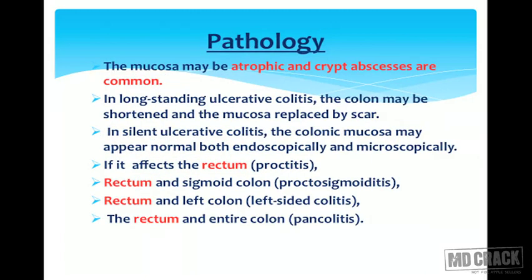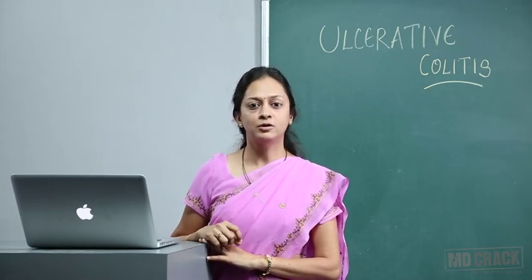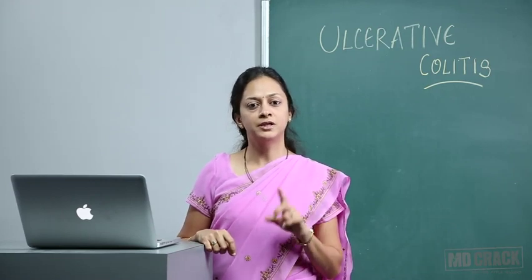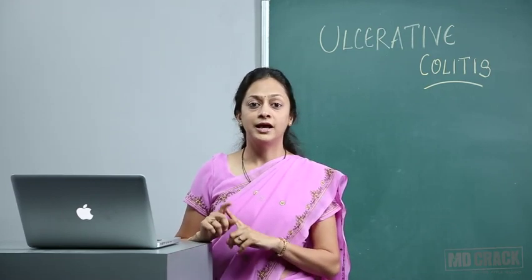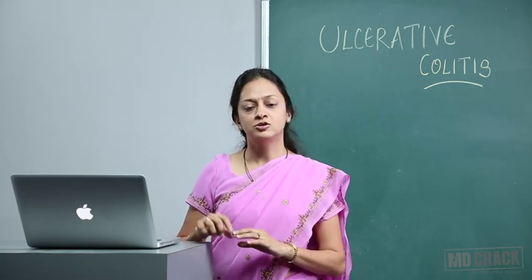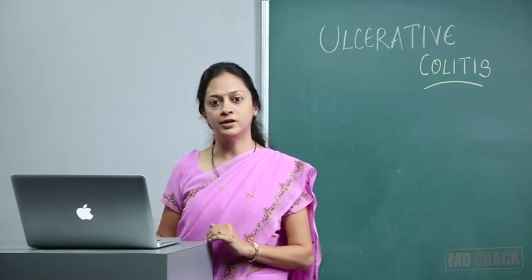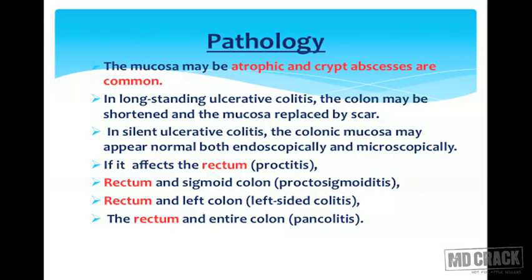In pathology, the mucosa may be atrophic and crypt abscesses are common. In Crohn's colitis it is the full thickness of the intestinal wall which is involved, whereas in ulcerative colitis it will be mucosal and submucosal disease — it is the mucosa which is involved. In long-standing ulcerative colitis, the colon may be shortened and the mucosa is replaced by scar.